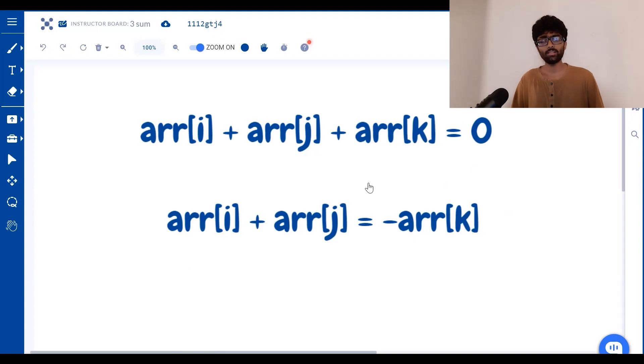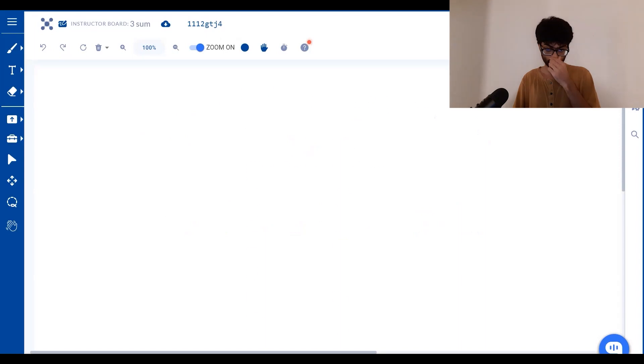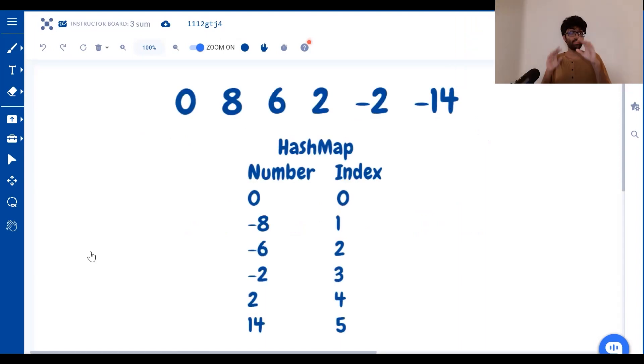So first we're going to have a look at the right hand side. What is minus Arr of k? It's just a negative of every number in the array. So what we do is we take the array, we convert every number into its negative and we store it into a hash map along with its index.